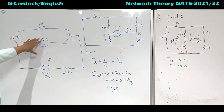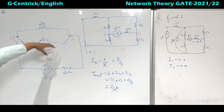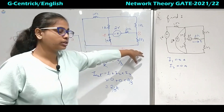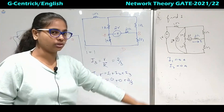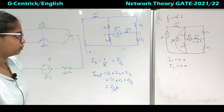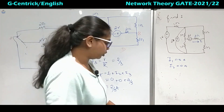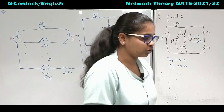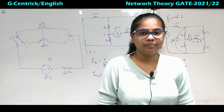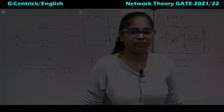So a complex network can be reduced easily using the superposition theorem. In the next lecture we will see a few more problems based on this. Thank you.